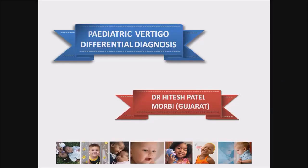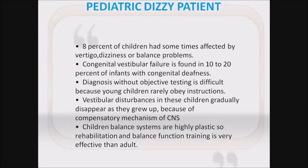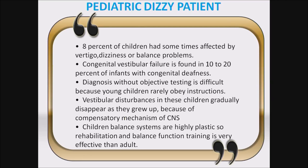Why is this topic important? Because most of the diseases routinely seen in adults are different from pediatrics. 8% of children are sometimes affected by vertigo, dizziness, or balance problems. Congenital vestibular failure is found in 10 to 20% of infants with congenital deafness. Diagnosis without objective testing is difficult because young children rarely obey instructions. Vestibular disturbance in these children gradually disappears as they grow up because of the compensatory mechanism of the CNS. Children's balance systems are highly plastic, so rehabilitation and balance function training is more effective than in adults.